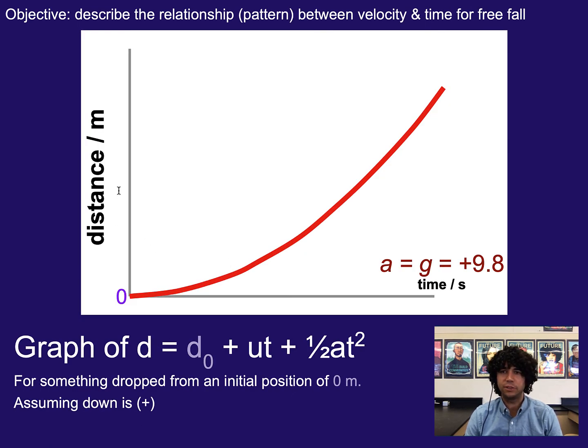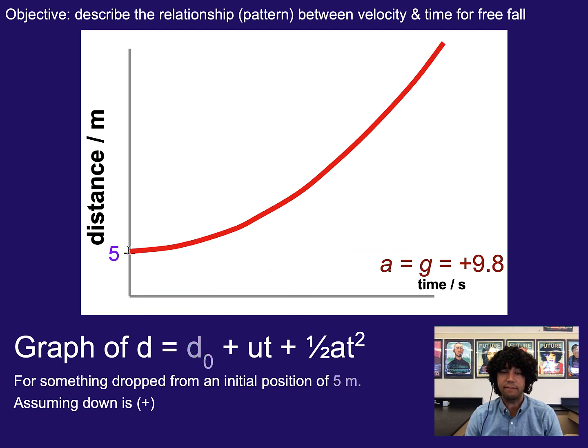So if we wanted to take a look at what these graphs might look like, we would see kind of a quadratic curve or parabola in this case. If that initial distance was zero, then it would start at the origin. However, if we had something starting at like five and then going from there, we would just be shifting our graph up. And so that's where that's coming into play.